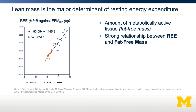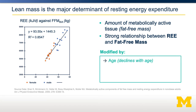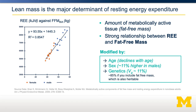This relationship is still somewhat modified by several factors. One of which is age — as people age, their basal metabolic rate declines. Sex also plays a role: it tends to be higher in males than females, partly due to fat-free mass, but even after adjusting for fat-free mass there's still a higher energy expenditure in men. The last modifying factor is genetics. It is estimated that about 11% of the total variation in energy expenditure can be attributable to genetics. If you include the genetic component of fat-free mass, which is also heritable, now about 85% of energy expenditure can be predicted by genetics.